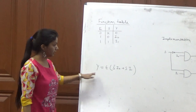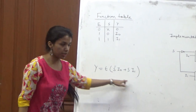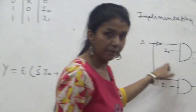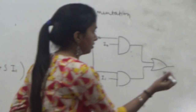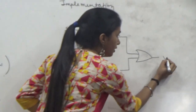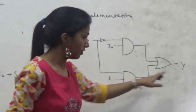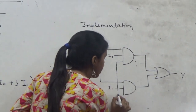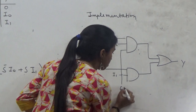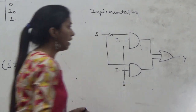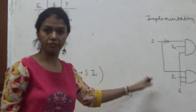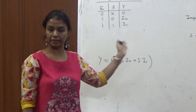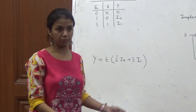From this function table, we can create the equation for Y, and from this equation we can implement the logic circuit. In this logic circuit we get output Y, and we also connect the enable to both AND gates. In a similar way, we can implement a 4-to-1 multiplexer, 8-to-1, and many more. Thank you so much.